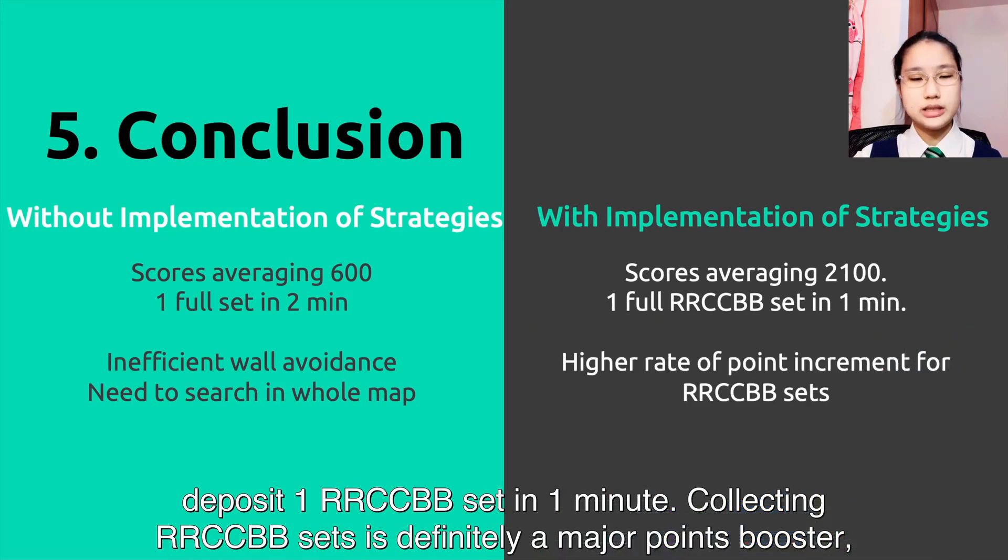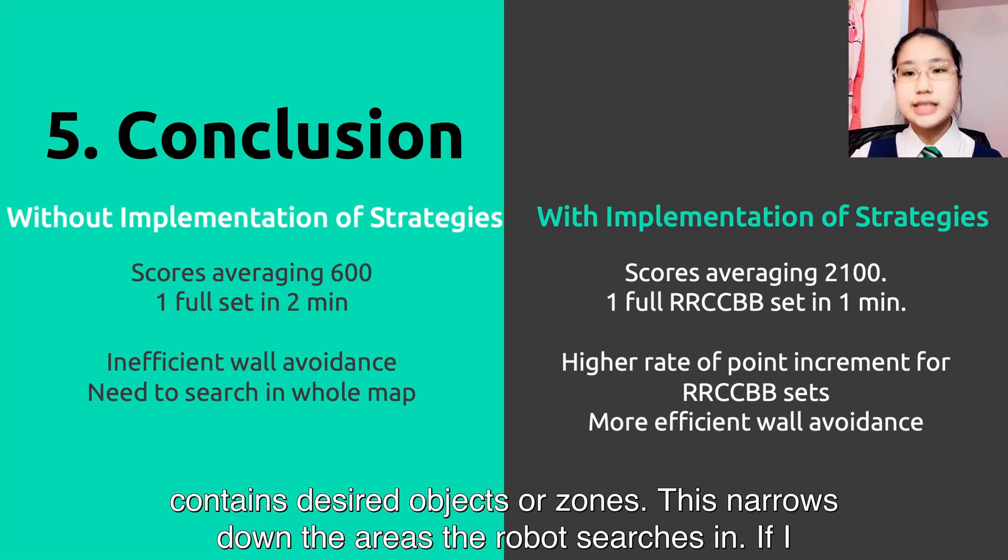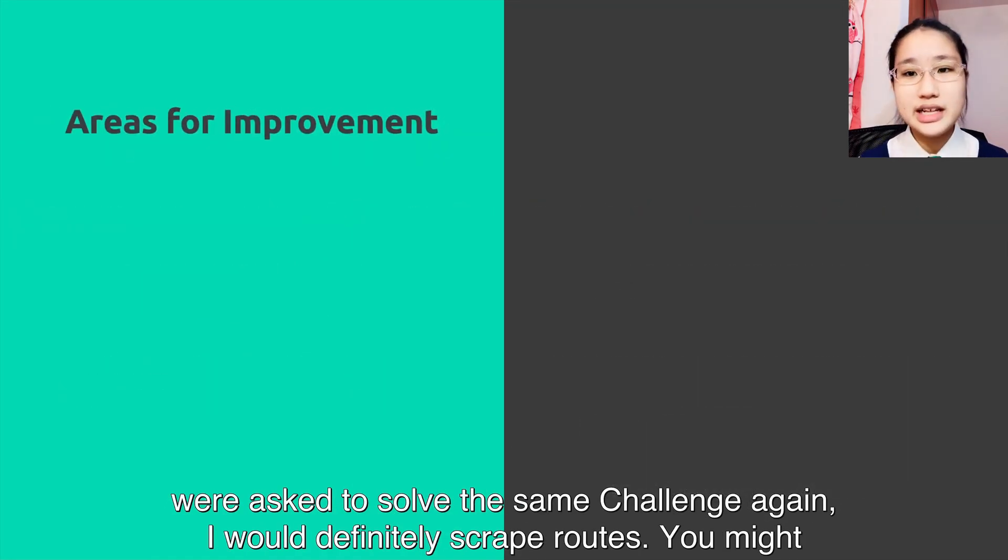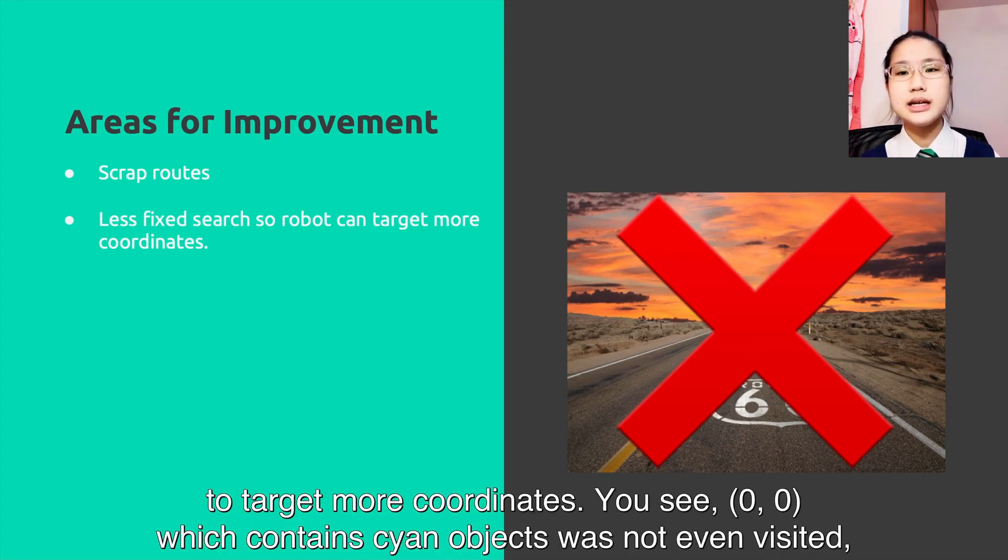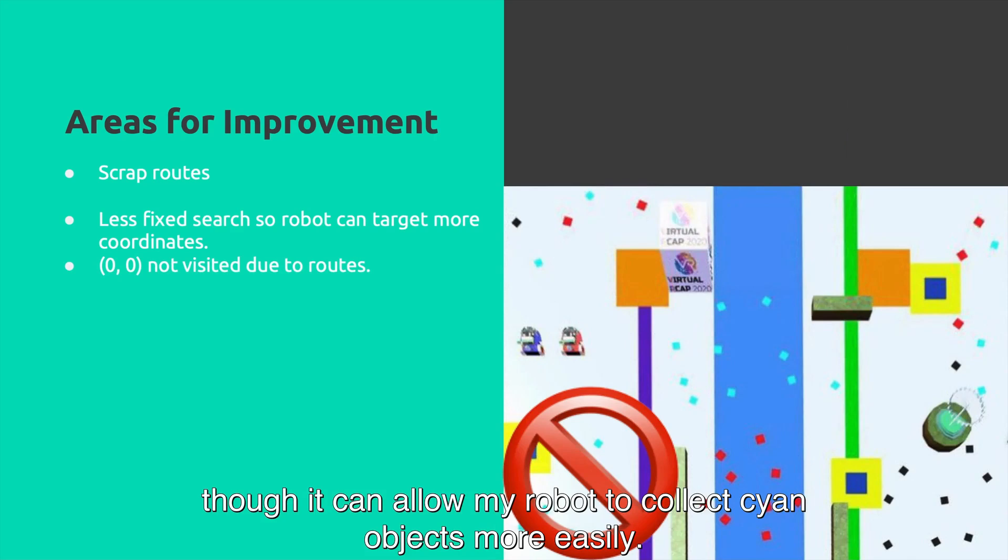Collecting RRCCBB sets is definitely a major point booster. But the most important thing, however, is to be able to search in the coordinates which contain the desired objects or zones. This narrows down the areas the robot searches in. If I were asked to solve the same challenge again, I would definitely scrap routes. You might be surprised, but I intend to focus on a slightly less fixed search, giving the robot more leeway to target more coordinates. You see, 0-0 which contains cyan objects was not even visited, though it can allow my robot to collect cyan objects more easily.